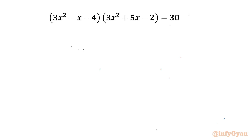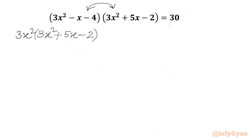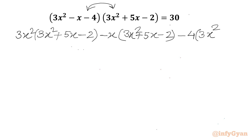This time I will multiply these two brackets. I will write 3x² times the second bracket (3x² + 5x - 2), then minus x times the second bracket (3x² + 5x - 2), then minus 4 times (3x² + 5x - 2), equal to 30.